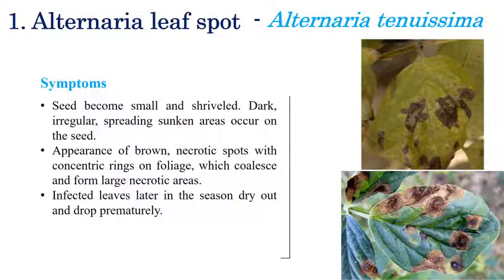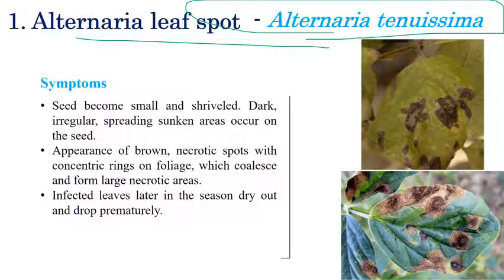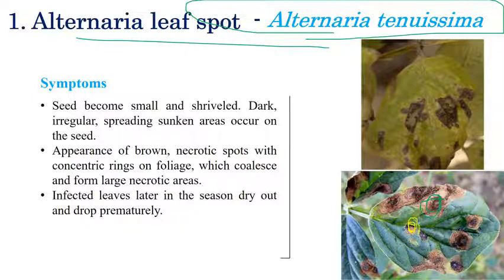The first disease is Alternaria leaf spot, caused by Alternaria tenuissima. Coming to the symptoms, necrotic spots can be seen on the leaves along with concentric rings. The formation of concentric rings is a characteristic feature of Alternaria — whatever Alternaria disease you take, the formation of concentric rings will be very common. Initially they form very small spots.